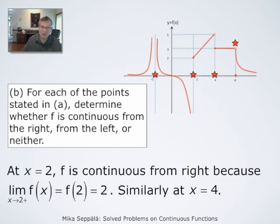At the point x = 2, f is continuous from the right because f has a limit of 2 when x approaches 2 through numbers larger than 2, and this 2 is also the value of the function at x = 2. Therefore f is right continuous at x = 2; it is not left continuous at that point. In the same way, at x = 4, the function has a right-hand limit equal to the value of the function. Therefore the function is right continuous at x = 4.